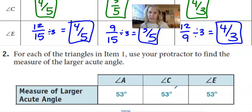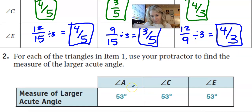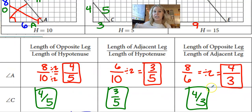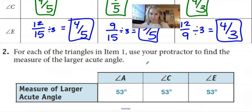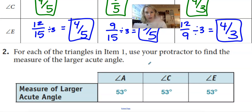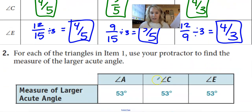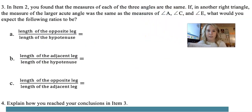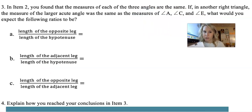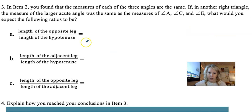For each of the following triangles, use your protractor — but you're just going to trust me that if I measured angles A, C, and E, they're going to be 53 degrees. This relates back to similar triangles. I had a right triangle with all sides proportional and all angles the same. In item 2, I found that the measure of each of the three angles are the same. So if another right triangle had the same larger acute angle as A, C, and E, what would you expect the following ratios to be?